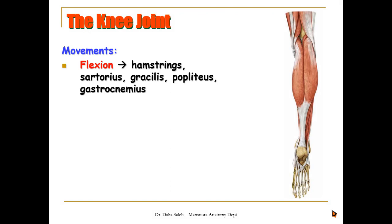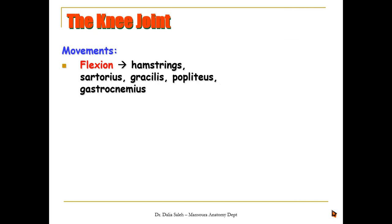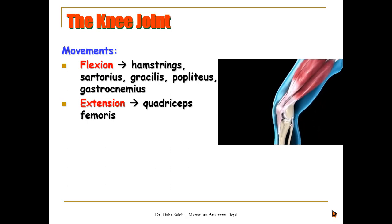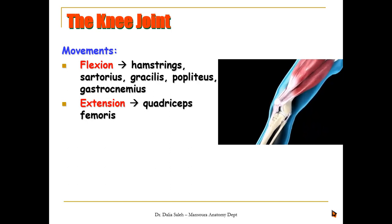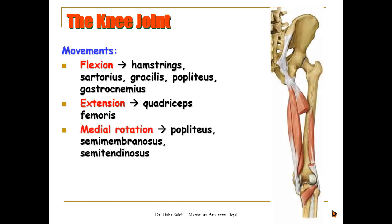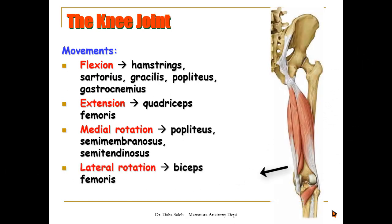Flexion of the knee joint is performed by muscles behind the knee: the hamstrings, sartorius, gracilis, gastrocnemius, plantaris, and popliteus. Remember that the popliteus is essential at the beginning of flexion since it is responsible for unlocking the knee joint. Extension of the knee joint is performed by the quadriceps femoris, made of four heads — the rectus femoris and the three vastii. Medial rotation is performed by the popliteus, semitendinosus, and semimembranosus, while lateral rotation is performed by the biceps femoris.